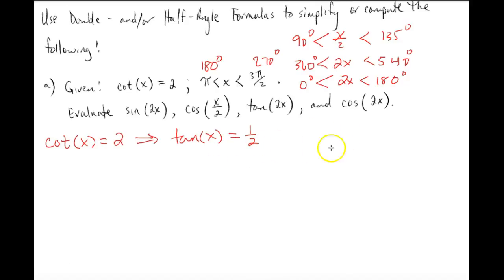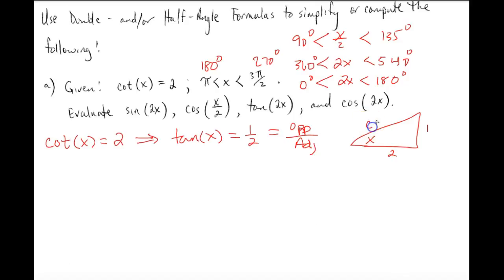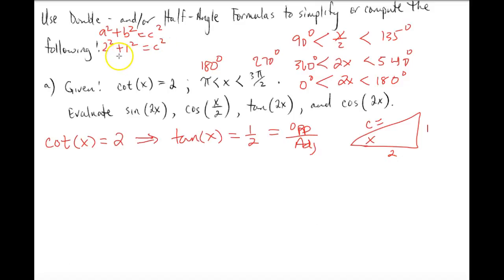Tangent is also opposite over adjacent, so if we draw a right triangle with opposite side 1 and adjacent side 2, we need to find the hypotenuse C. Using the Pythagorean theorem: 2² plus 1² equals C², which gives us 4 plus 1 equals 5. Taking the principal root, C equals √5.